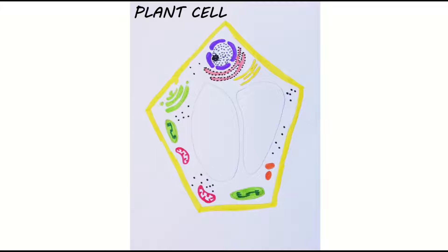Plant cells contain all the organelles that you would find in an animal cell but they also contain three key features that you need to be aware of.